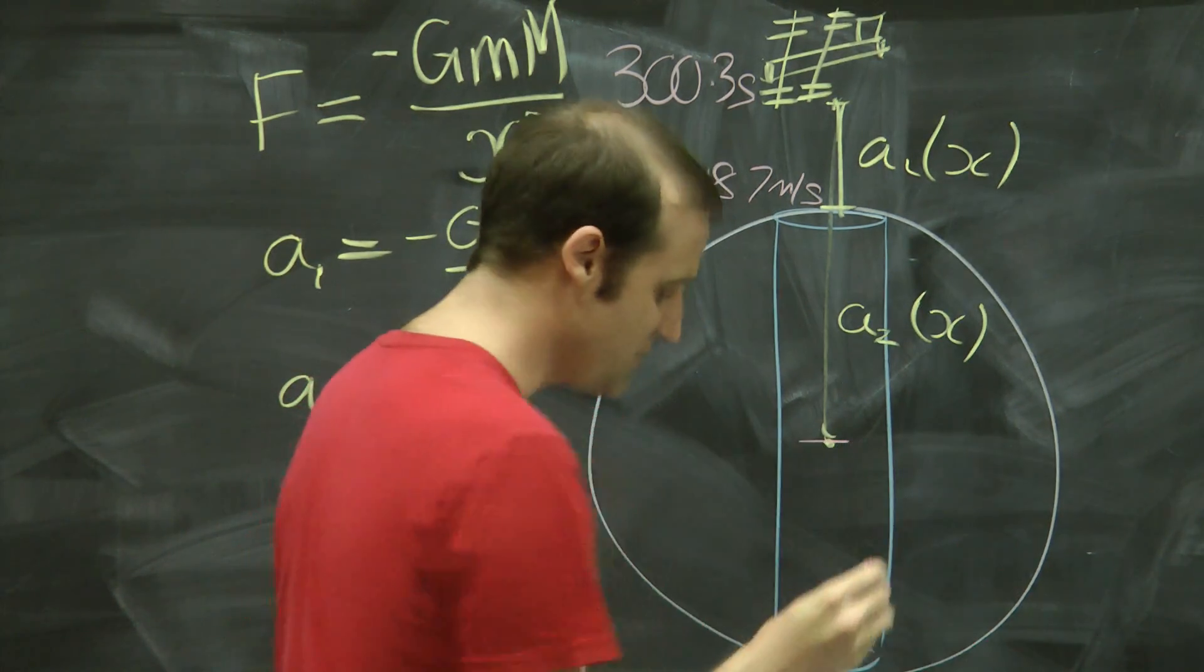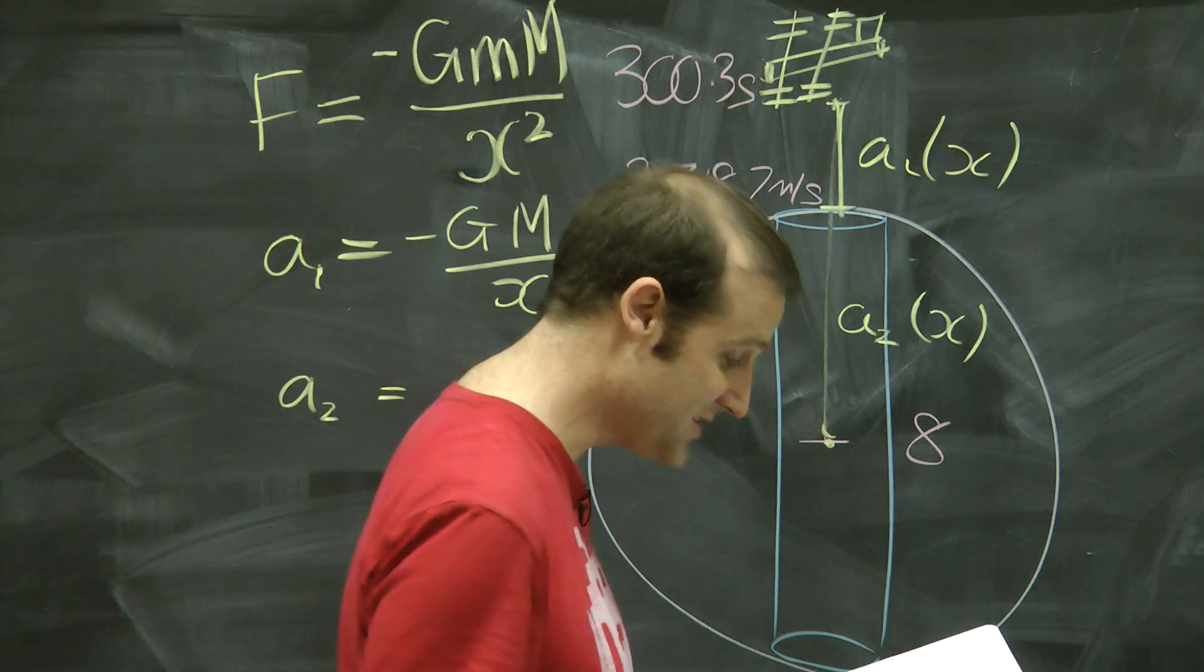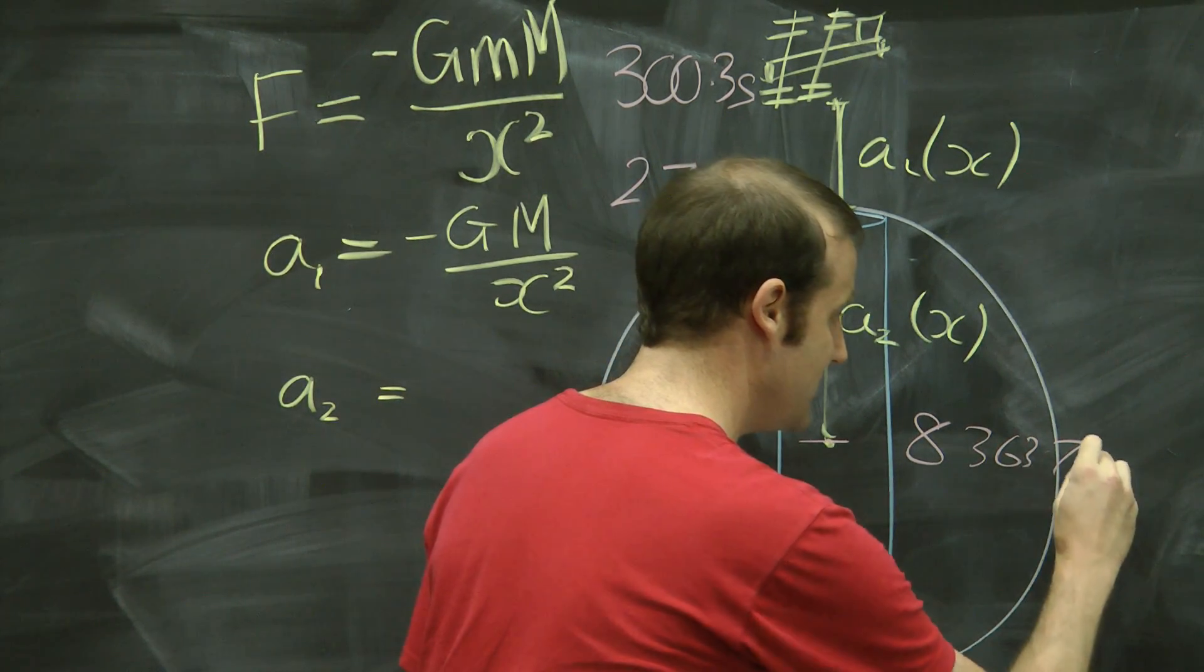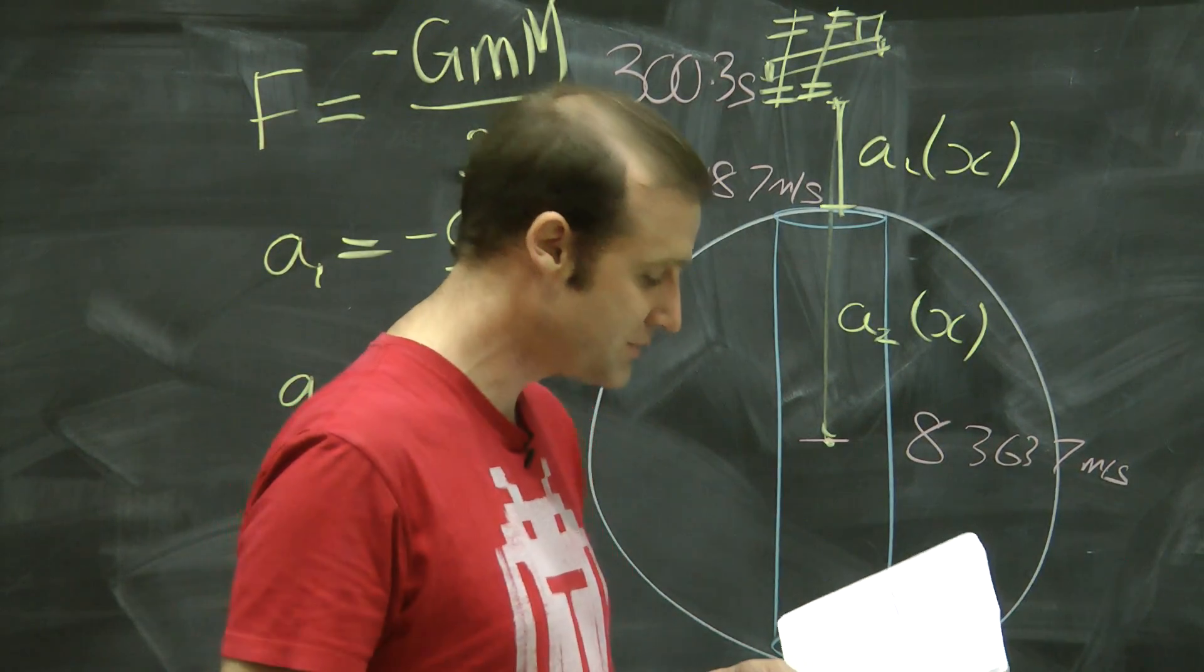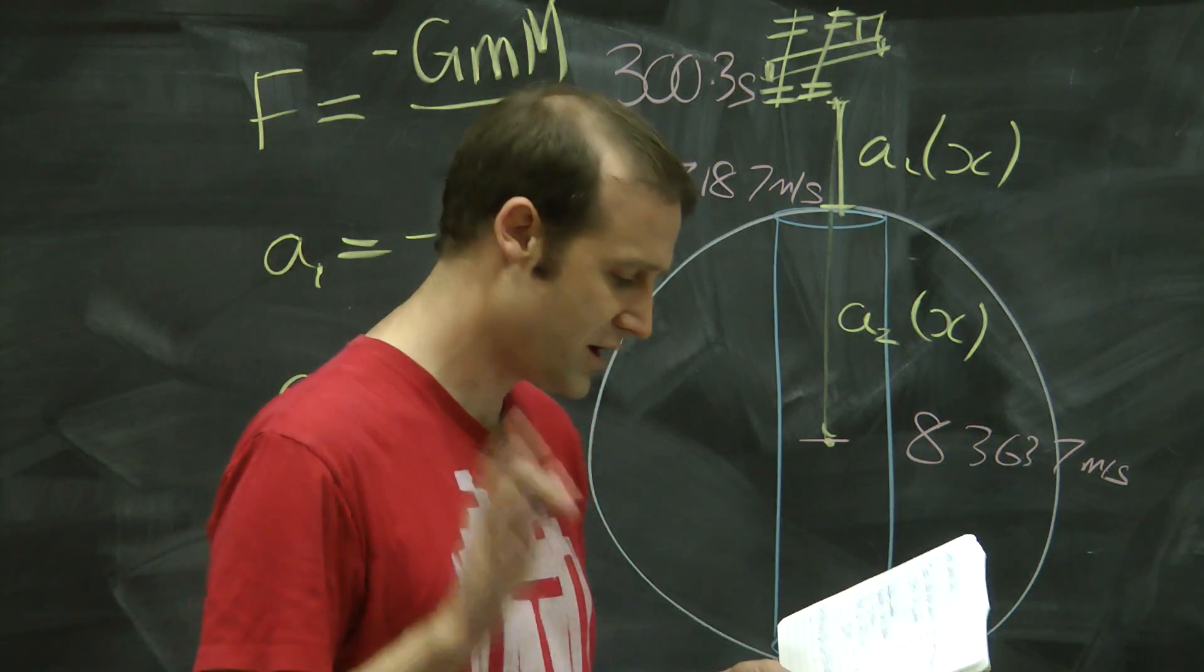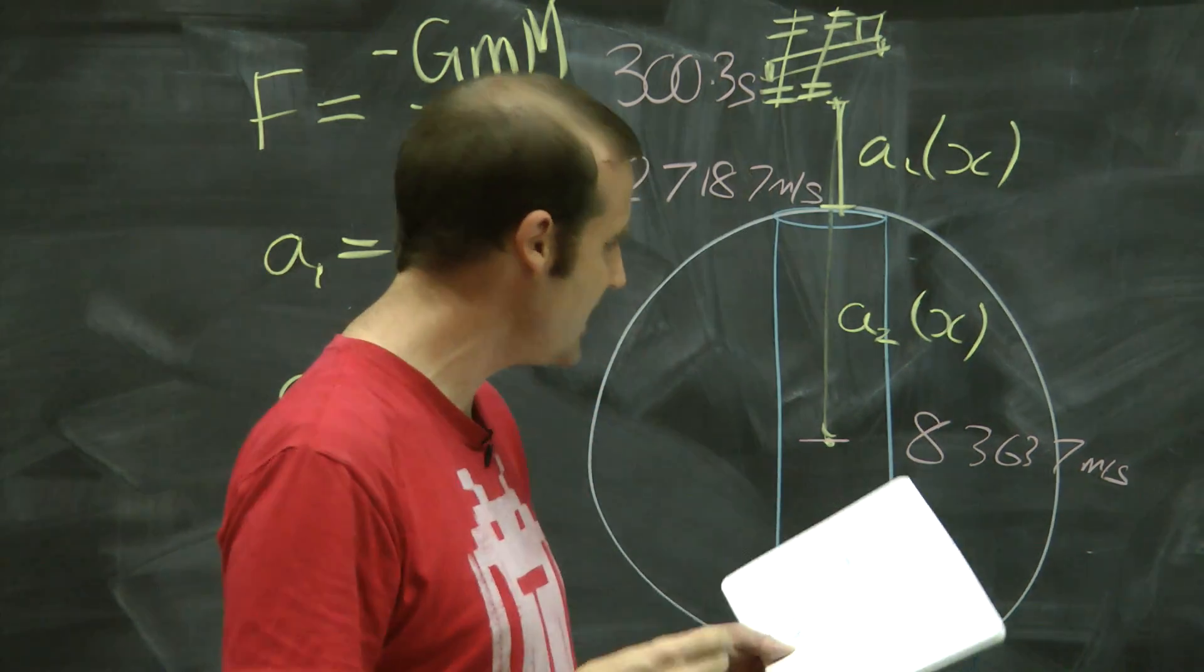You then go into the second phase of the fall down towards the middle. When you hit the middle, you cap out at a maximum velocity of 8,363.7 meters per second, which is phenomenal. If you compare that to the International Space Station, it's going slower. Work it out. You've got the equations.